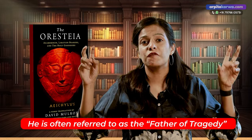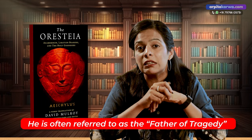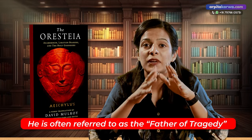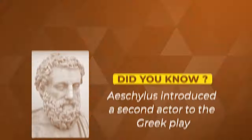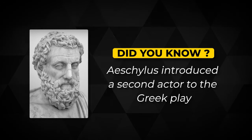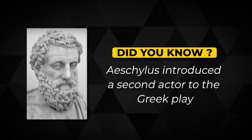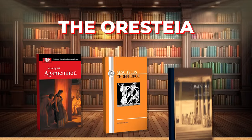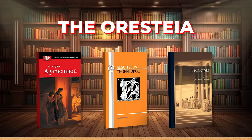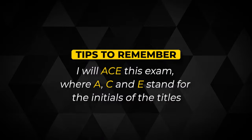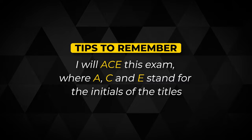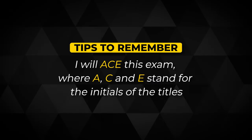Aeschylus is referred to as the father of tragedy for his significant contribution to the development of Greek drama. He also introduced a second actor to the Greek play. This trilogy consists of three works: Agamemnon, Choephori, and Eumenides. The trick to remember the sequence is the word ACE — A-C-E stands for the three works.